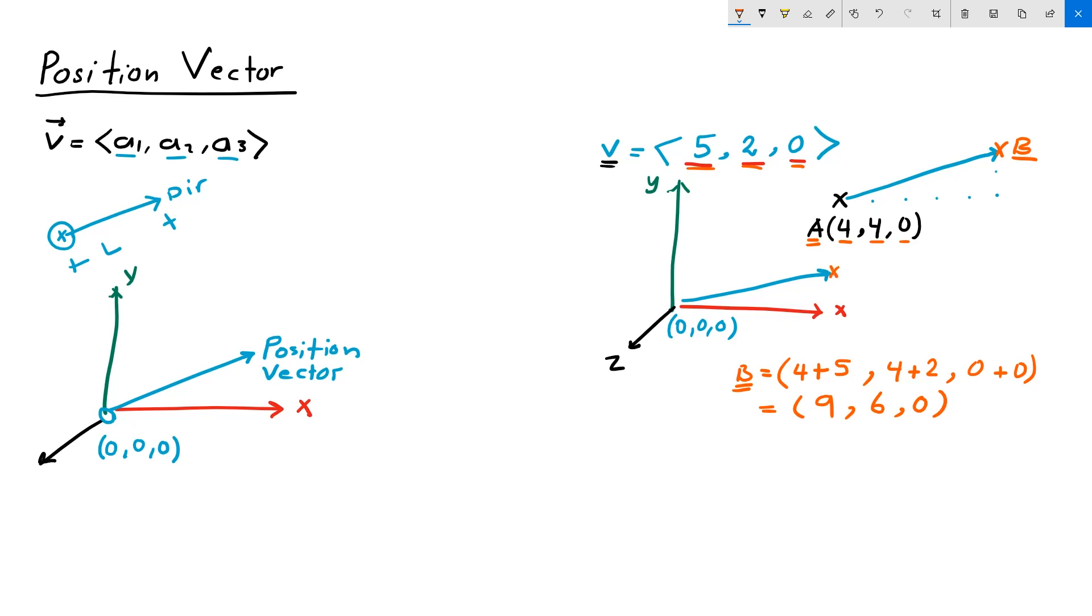The tip point of that vector, let's call it b dash, can be calculated again by adding the coordinates of the origin to the components of my vector. So b will equal 0 plus 5, 5, 0 plus 2, that's 2, and 0 plus 0, 0.